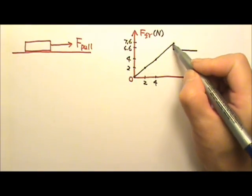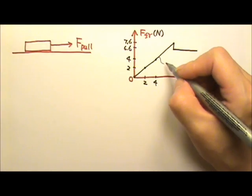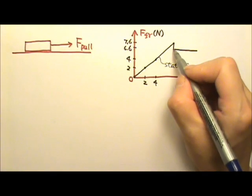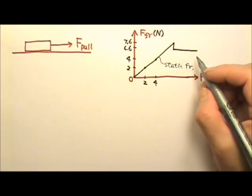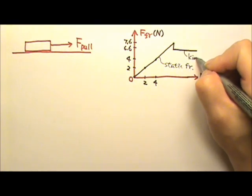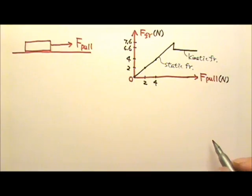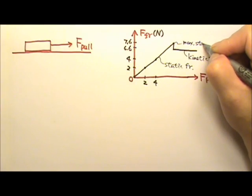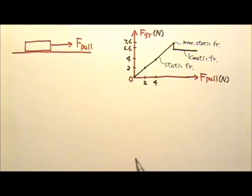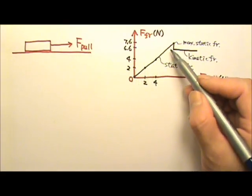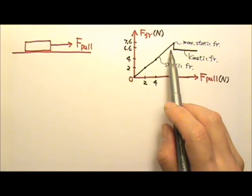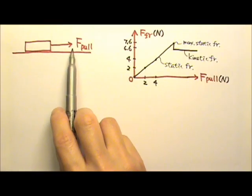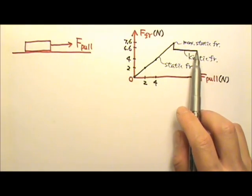This part is before sliding. We call this friction static friction. This part is when the box is sliding, so we call this friction kinetic friction. Notice that we have a peak right here. This value here is called the maximum static friction. So you can see that the static friction can be various amounts. However, the kinetic friction is the same no matter how hard we pull. This means no matter how fast the book slides or accelerates, the kinetic friction will be the same amount.